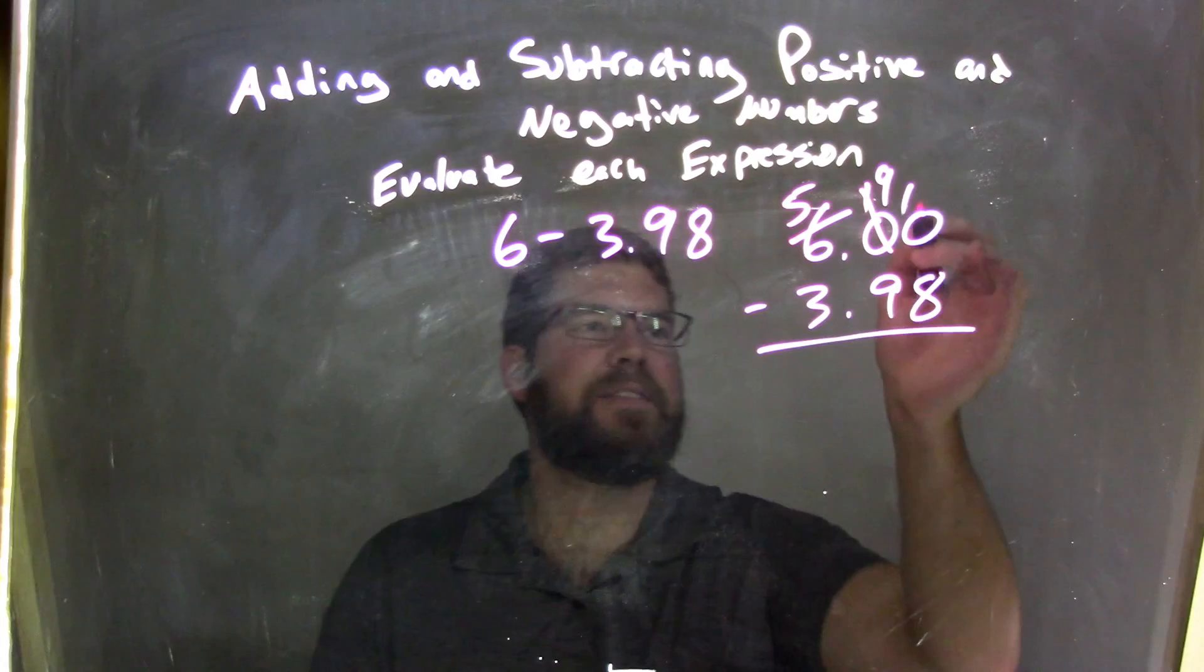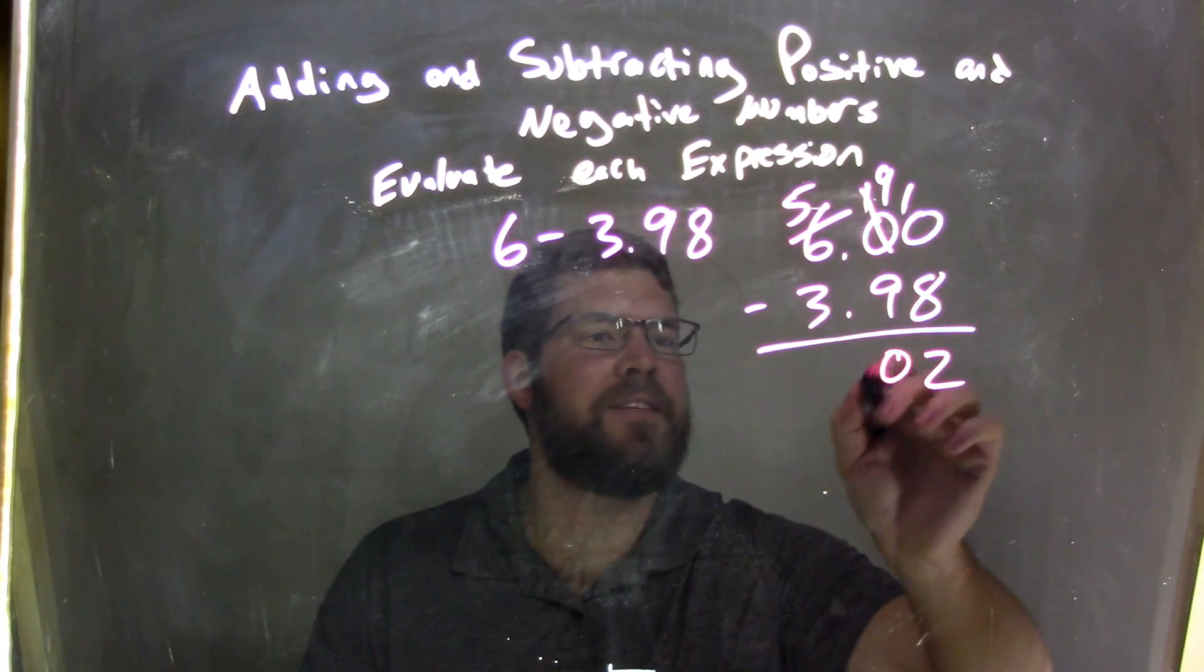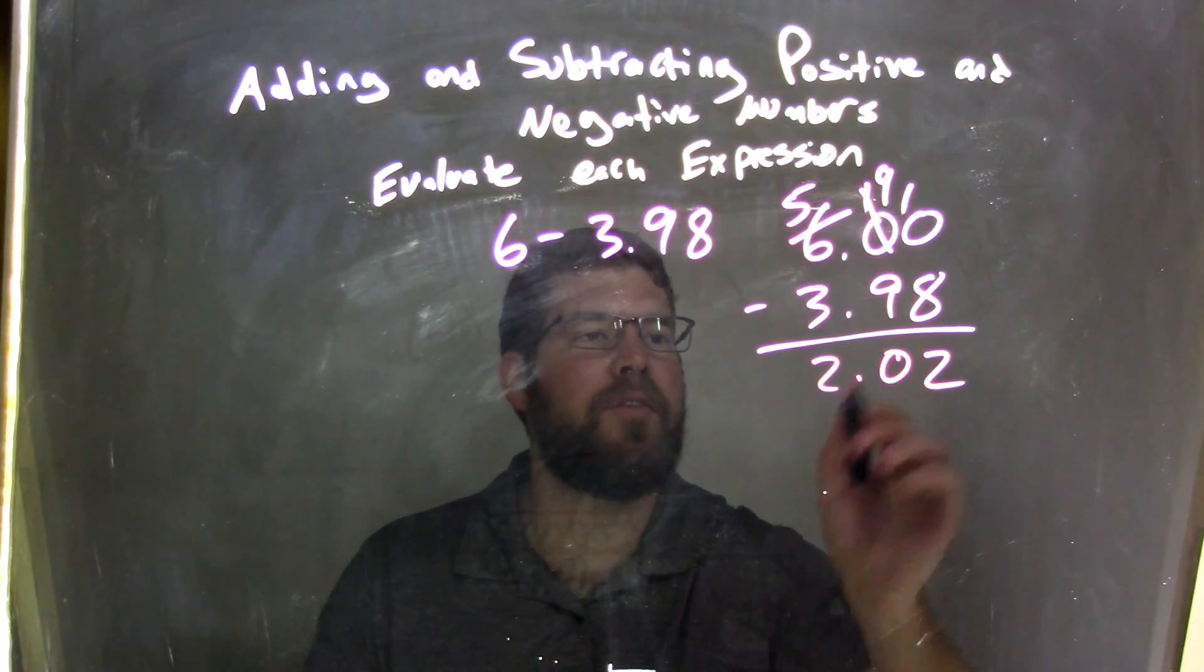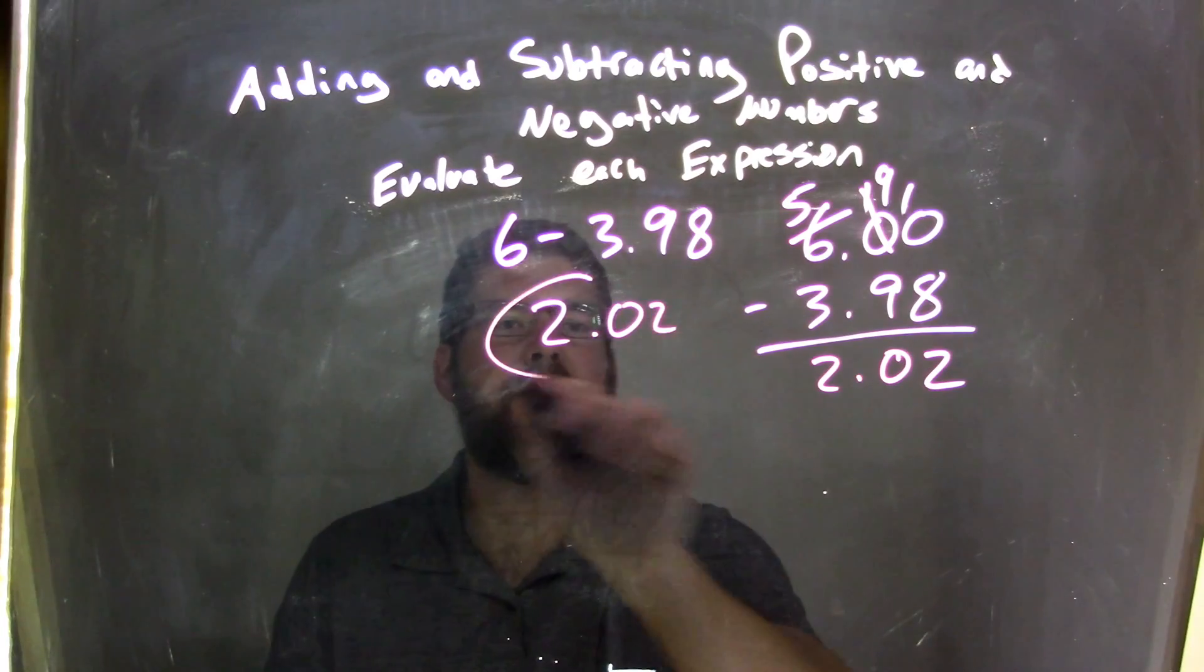So now I have 10 minus 8, which is 2. Keep the decimal points in line. 9 minus 9, which is 0, and 5 minus 3 is 2. So my final answer is 2.02.